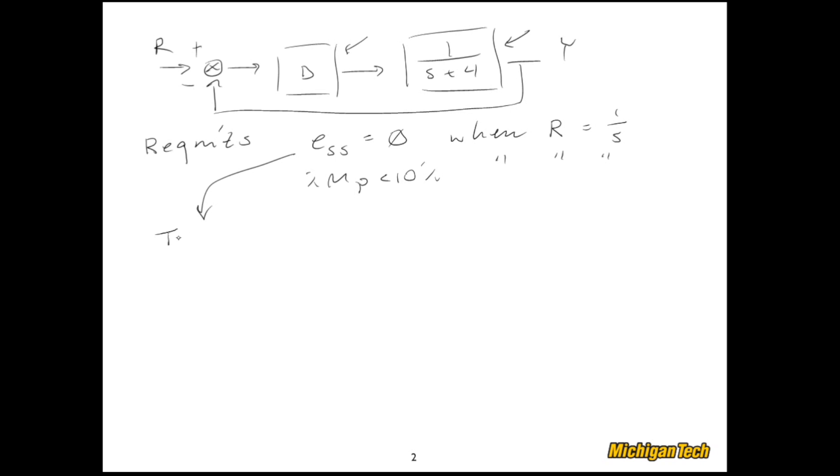Well, this requirement says that my system needs to be type 1. Right now, it's type 0. Well, I really don't know what the type is because I don't know what D is. But if D were just a constant, proportional controller, then this would be a type 0 system. If I need it to be type 1, I need to get a pole at the origin in the compensator. Something like that. So I'll go ahead and try this. We'll let the compensator be a pure integrator with some design parameter K.